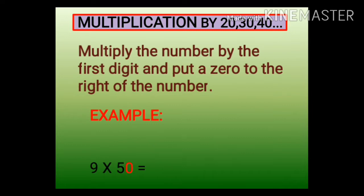Next example: 9 into 50. What is 9 into 5? It is 45. Then place the zero to the right.